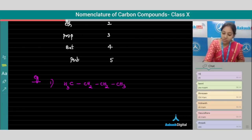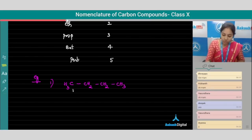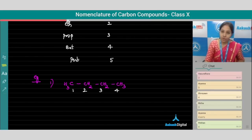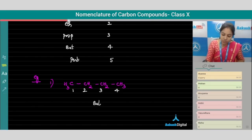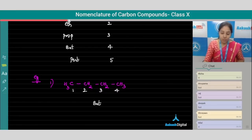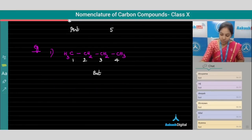Observe this structure. How many carbon atoms do you see here? One, two, three, four — we have four carbon atoms. The name considered for four carbon atoms is 'bute,' so our root word is 'bute.'